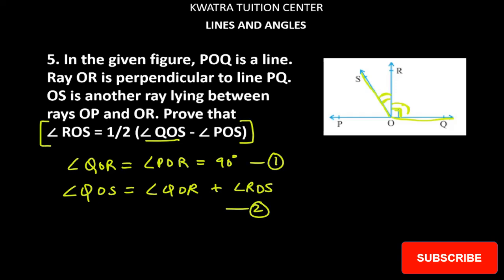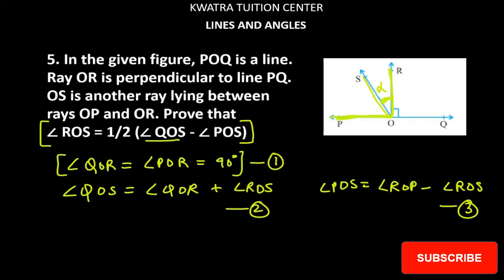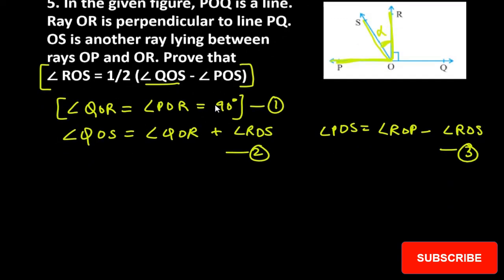Next, let's involve POS. Observe carefully how you would write POS. There is no intermediate angle in POS, so let's try to write it in terms of ROP. POS = ROP minus ROS — remove the ROS part from ROP to get POS. Now, ROP is basically 90 degrees, as we wrote in the first equation. So POS = 90 minus ROS. This is equation 3.